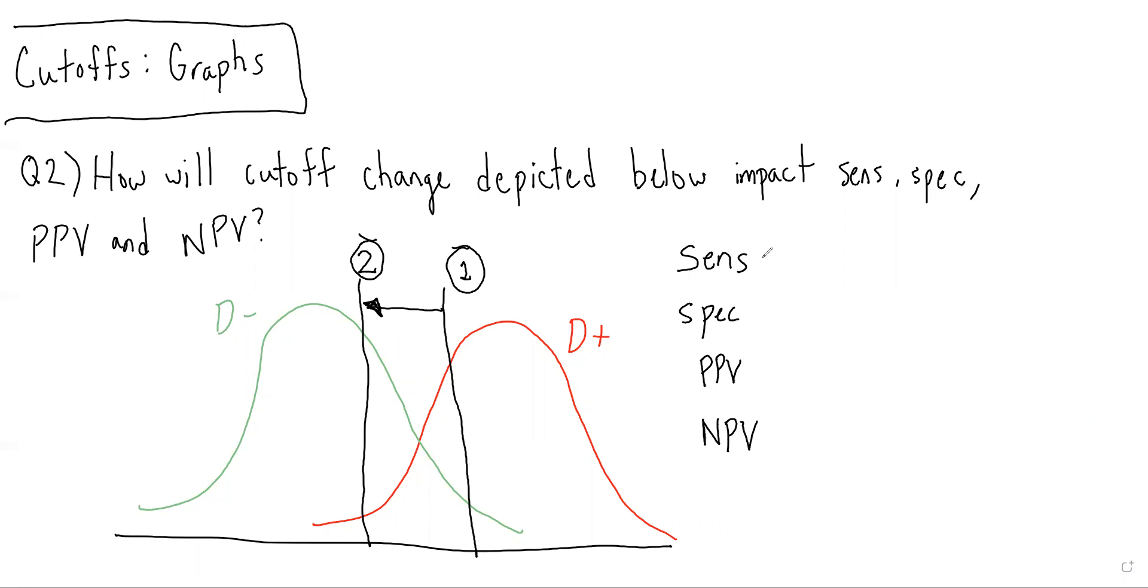If we remember, sensitivity is the probability of getting a positive test result given you have the disease. So among those with the disease, how many have a positive test result? How much of the area of this disease-positive curve lies to the right of the cut-off?